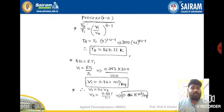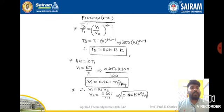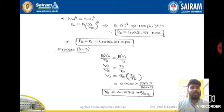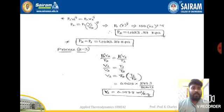Using the ideal gas equation p1·v1 = mRT1 with m = 1 kg, we get v1 = RT1/p1, which gives v1 = 0.861 m³/kg. Since the compression ratio is 14, v1 = 14·v2, so we can find v2. Then using p1·v1^γ = p2·v2^γ (the adiabatic gas equation), we can find the pressure p2 at state 2.